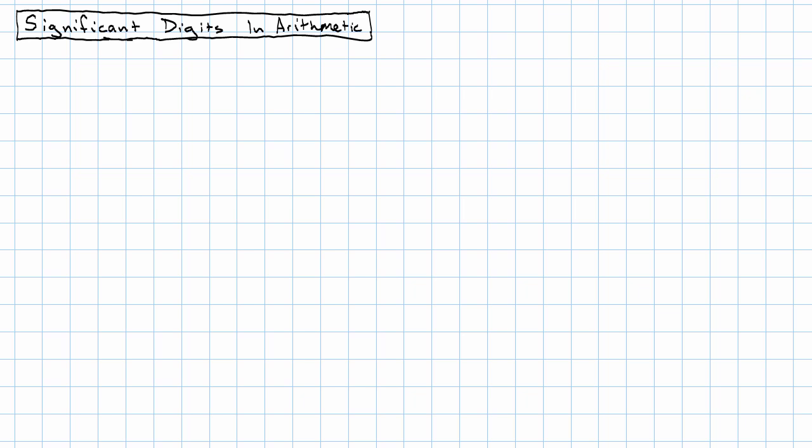Because when we go into division, we aren't going to have the option to just leave our answer as a fraction. So this has to do with what the significant digits represent.